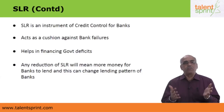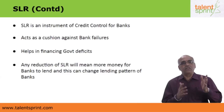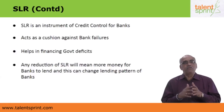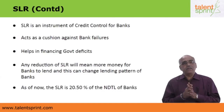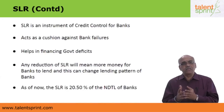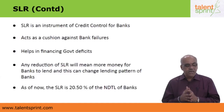When SLR comes down, banks have more money to lend and interest rates fall; they may also change their lending patterns. An increase in SLR means less money to lend and higher interest rates. Currently the Statutory Liquidity Ratio is 20.5% of Net Demand and Time Liabilities, while the Cash Reserve Ratio stands at 4%.